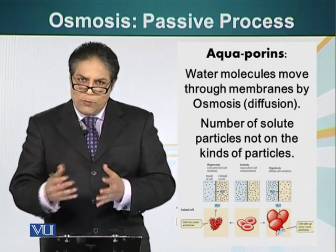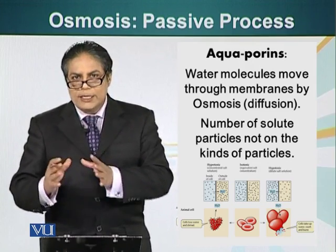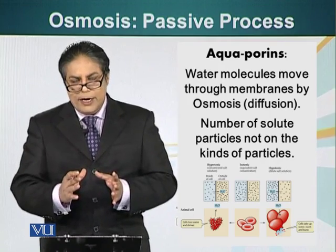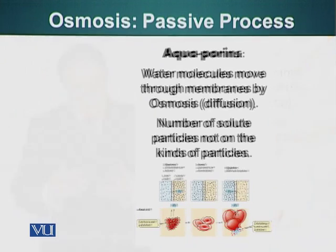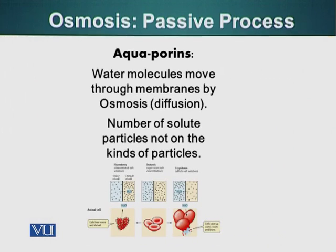Water moves across the membrane in a passive transport manner, which means it will move due to concentration gradient and does not require energy. For example, if we put a cell in a hypertonic solution — where the concentration of salt is less inside the cell than outside — the water molecules will leave the cell and enter the outside domain. This is similar to diffusion, with molecules moving from higher concentration to lower concentration.